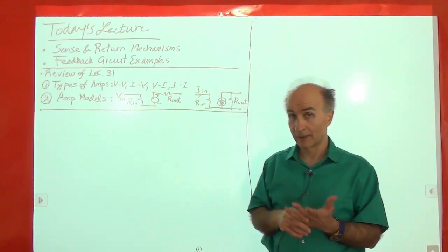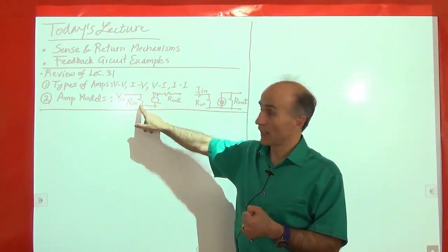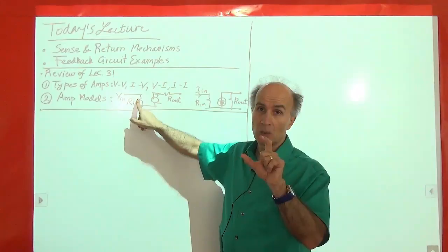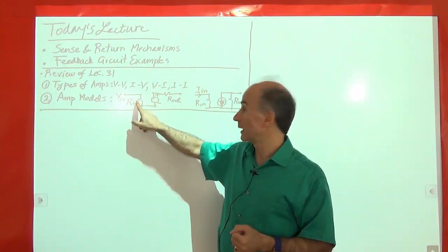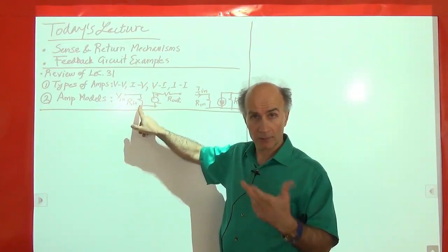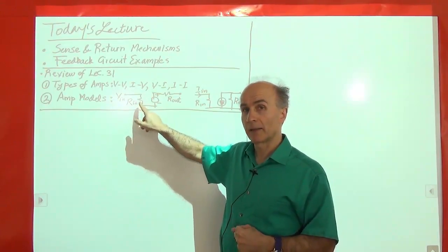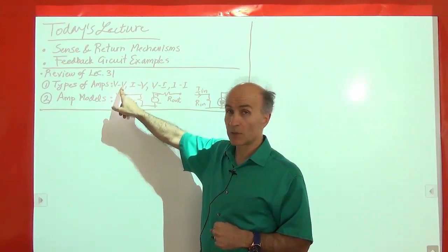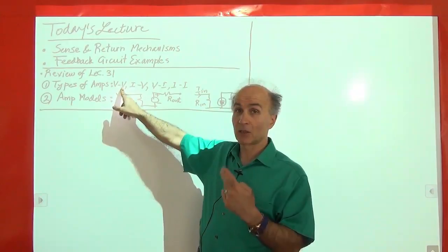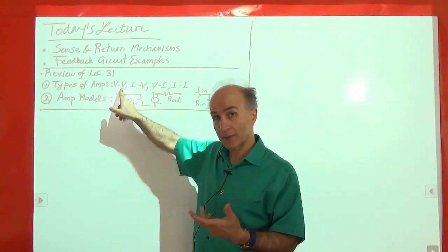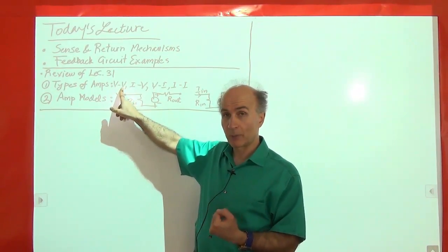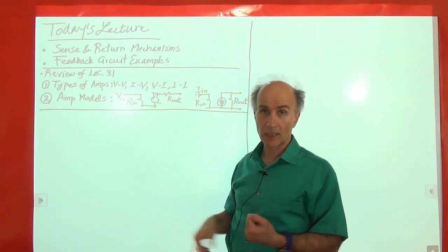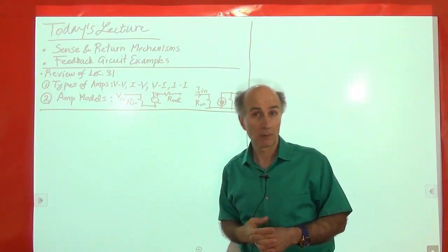Ideally a voltage amplifier should have an infinite input impedance because it wants to sense a voltage without disturbing it. In reality, there will be some finite resistance—preferably a high value—called R-in. Similarly, a voltage amplifier wants to produce a voltage, so it wants to act as a good voltage source. A good voltage source has a very small output resistance, in series with the output.